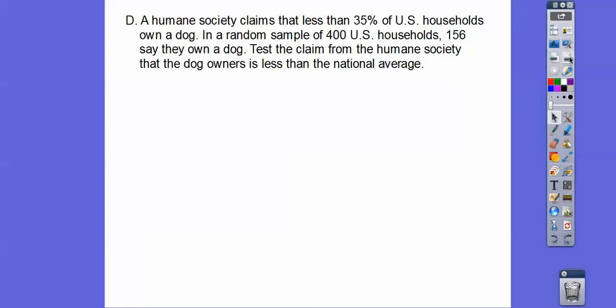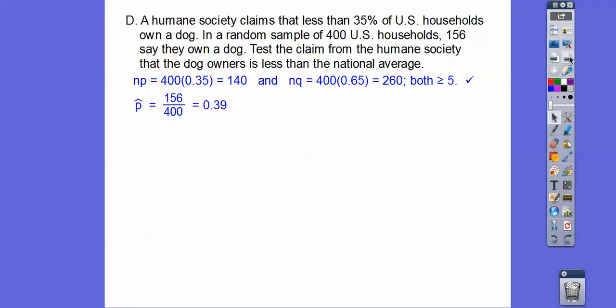The Humane Society claims that less than 35% of U.S. households own a dog. In a random sample of 400 U.S. adult households, 156 said they own a dog. Test the claim that dog ownership is less than the national average. This is a proportion problem because of the percentage. So NP is 400 times 0.35, and NQ is 400 times 0.65 — they're both greater than or equal to 5, so we can go ahead and use the Z-score distribution.